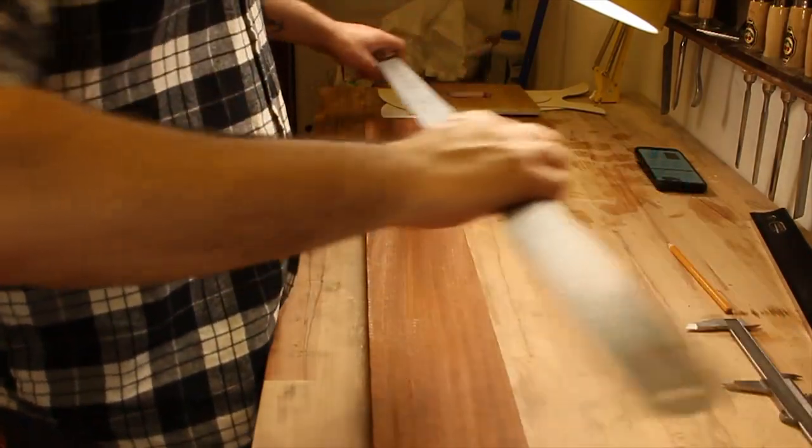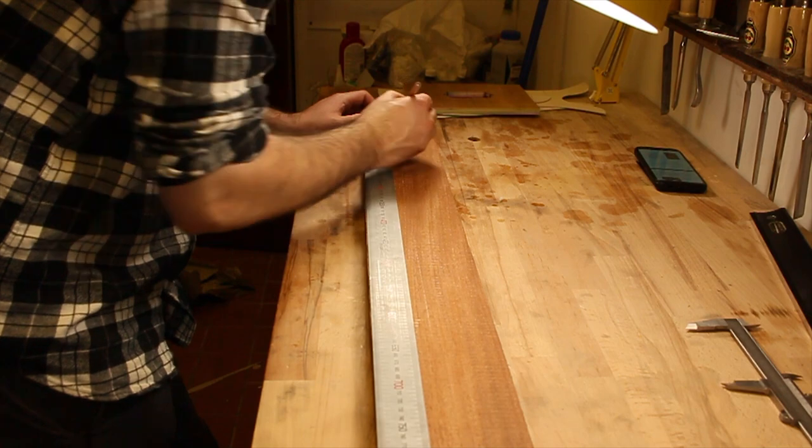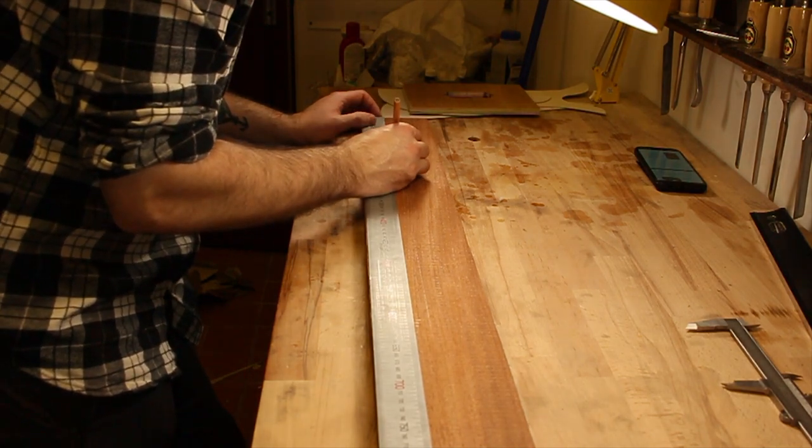When I start working on a guitar neck, I firstly measure how much material I will need. I cut 200mm for the headstock and then around 500mm for the length of the neck.